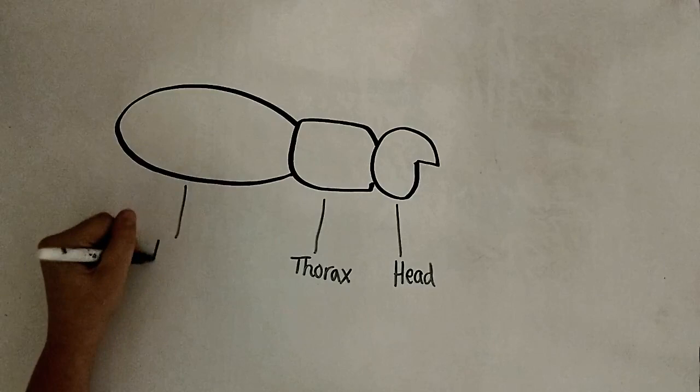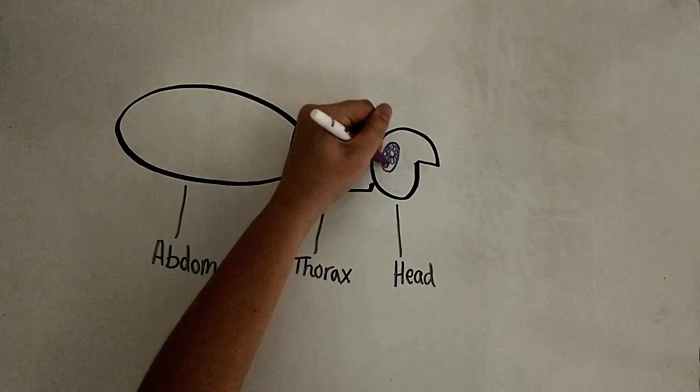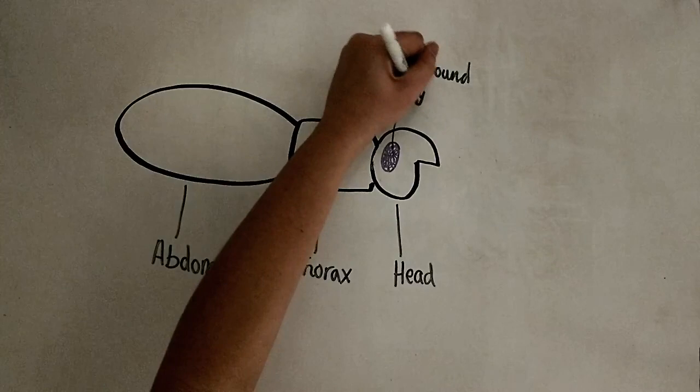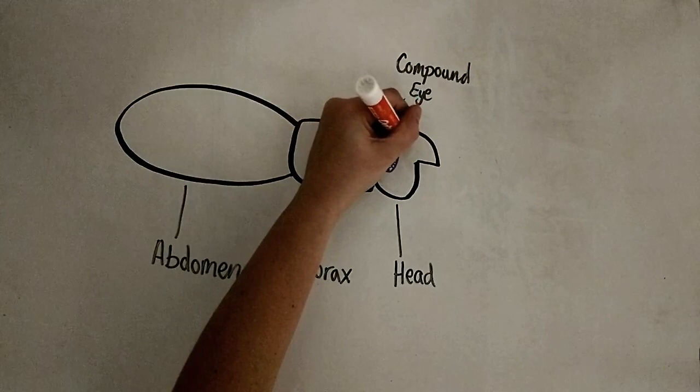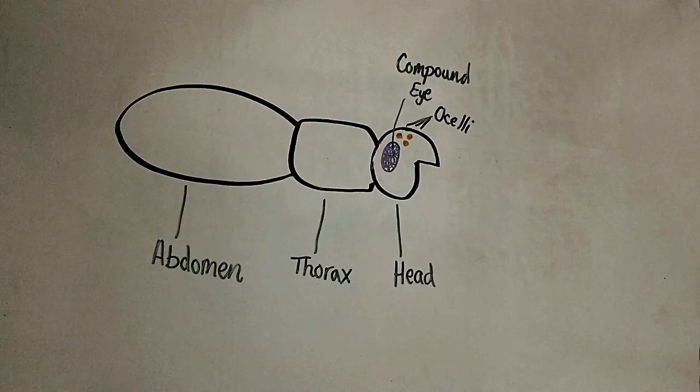On the head, we will be talking about mostly sensory organs. Insects have compound eyes that have many small lenses. These eyes are used for both color and movement. They also have ocelli, which are individual lenses and are mostly used for light sensing.